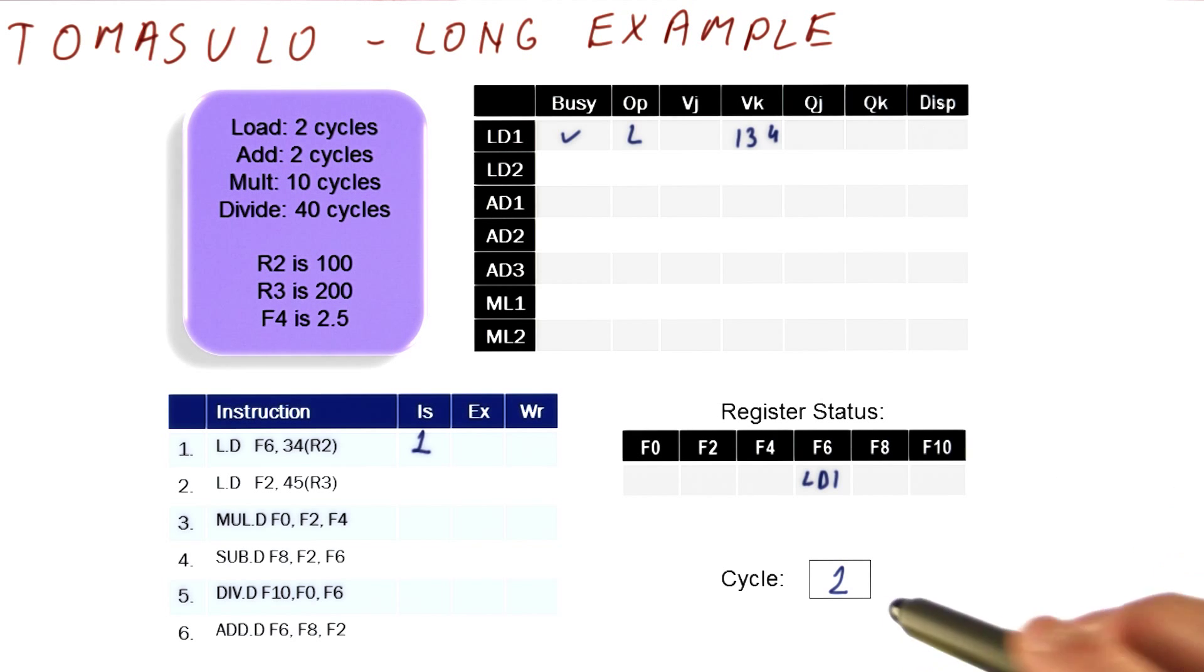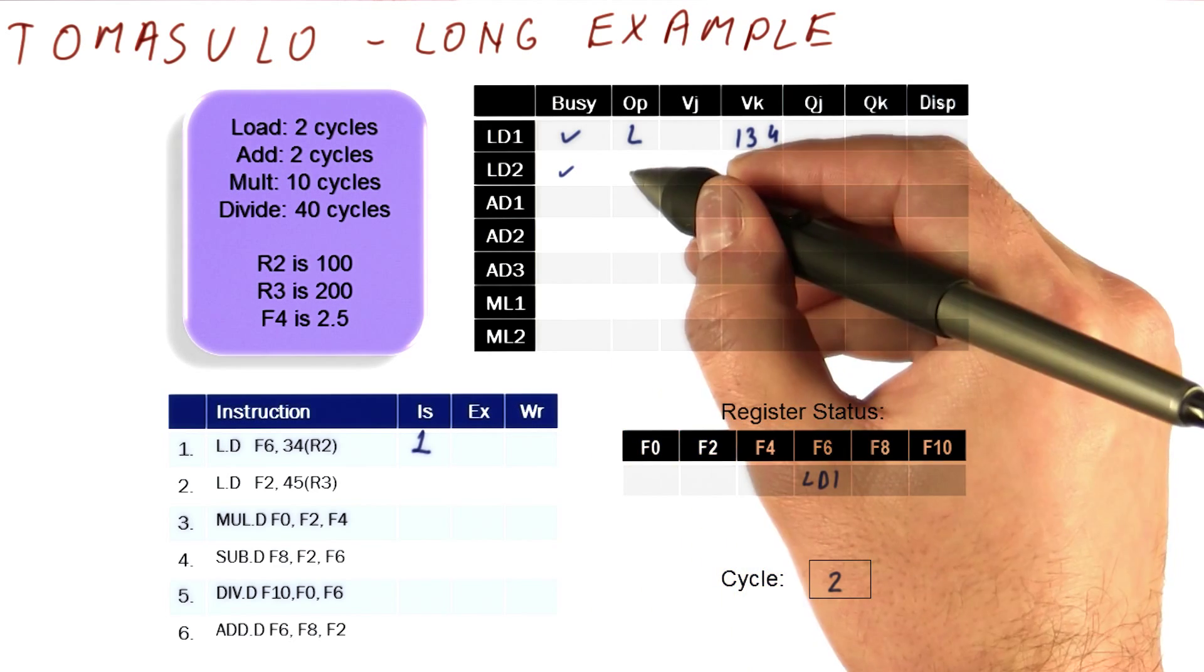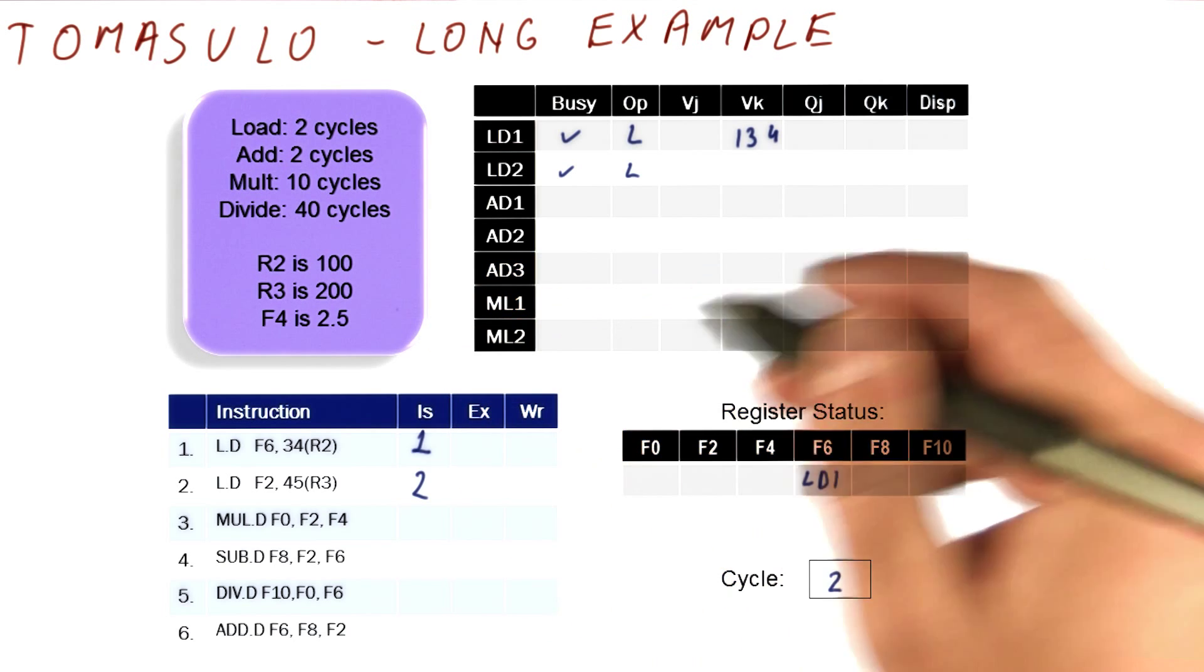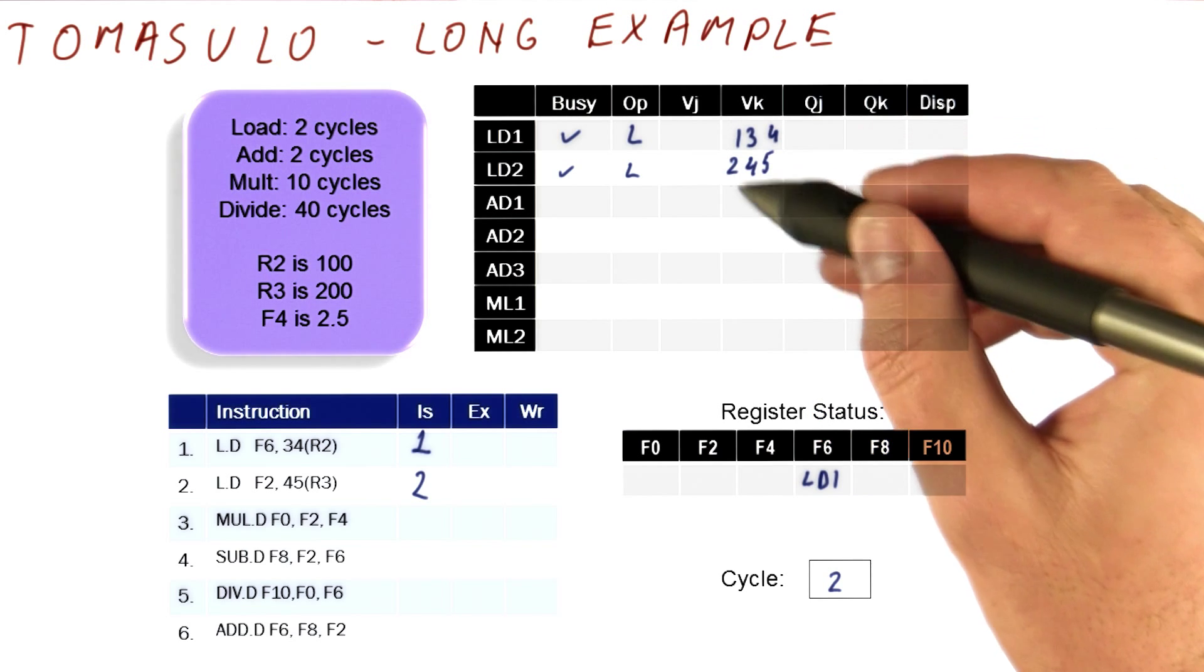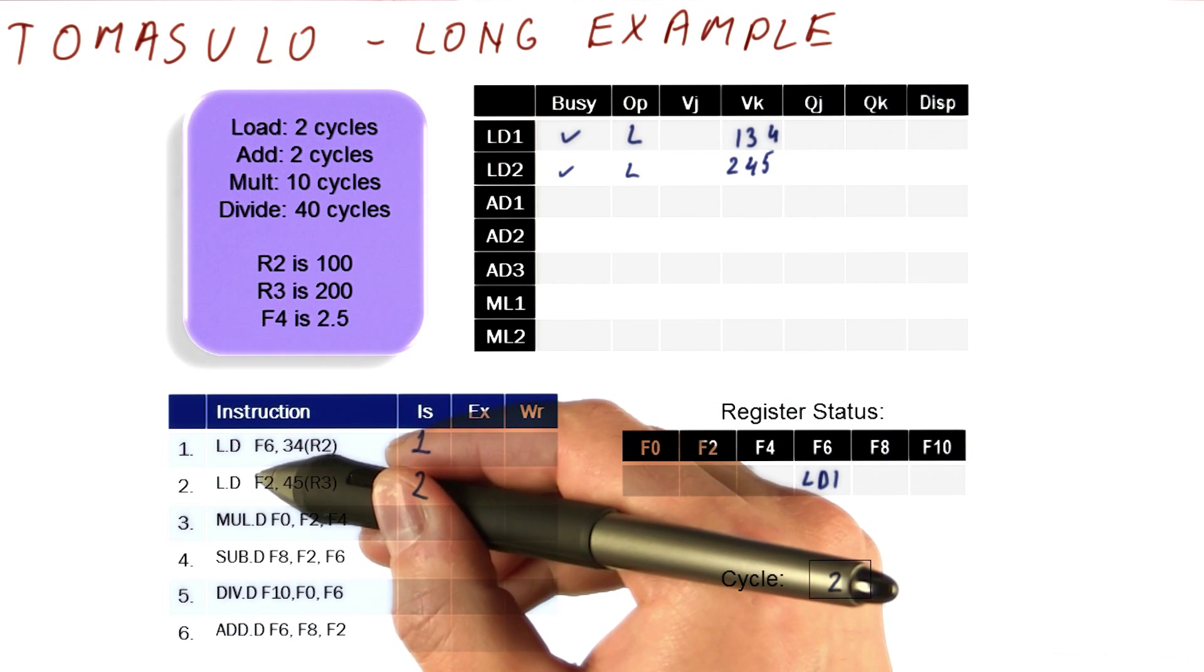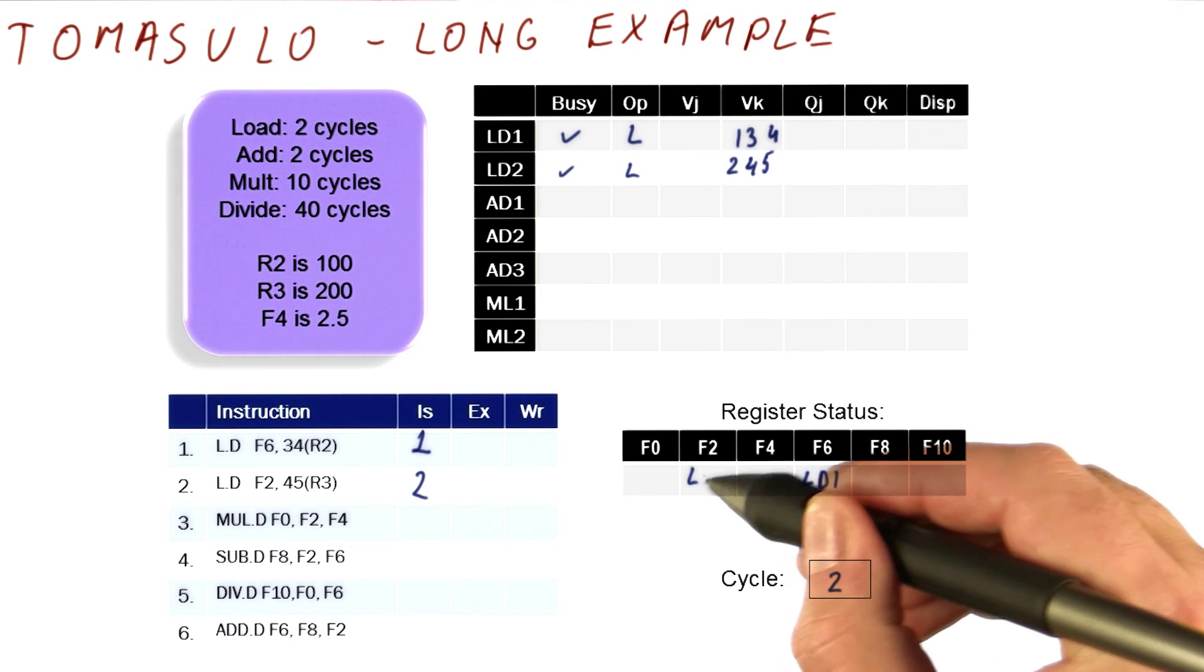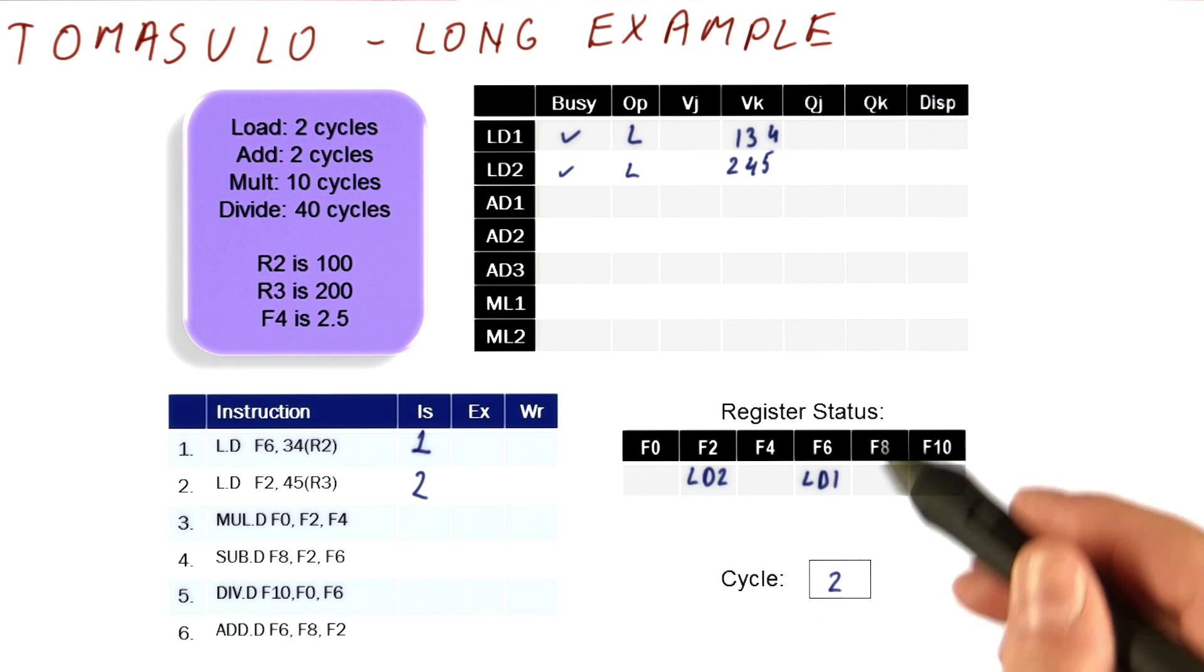Now let's look at the second cycle. In the second cycle, we will try to issue this load, and there is a free unit, so we will do that. It's 45 from R3, so it's going to be 245. Again, this is done by the address unit, it's not done by the ALUs or anything. So this addition gets done immediately, and we are not waiting for anything because the load doesn't really need to wait for any floating point registers. F2 is where we're going to put the result. So we're going to mark this as LD2, and this is it as far as the issuing is concerned in this cycle.